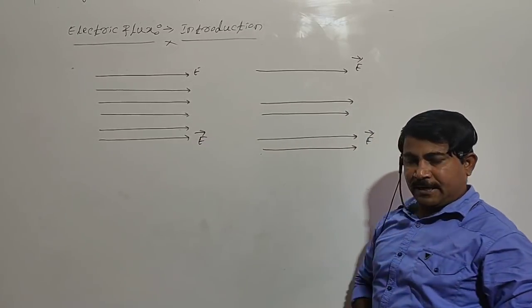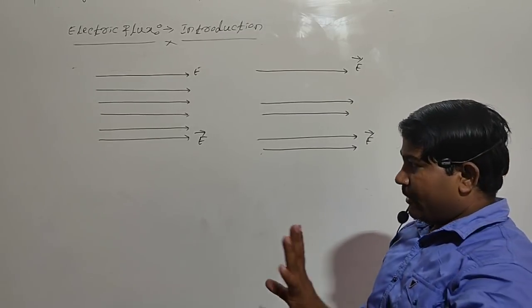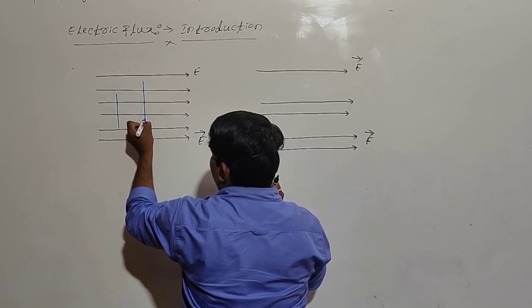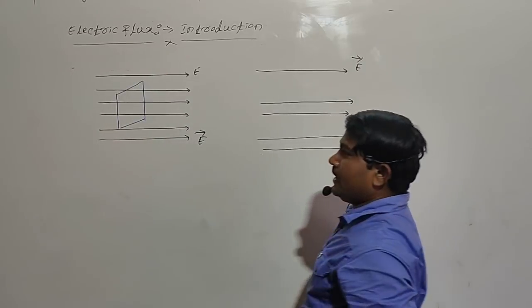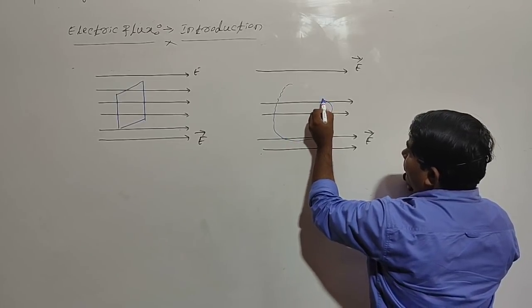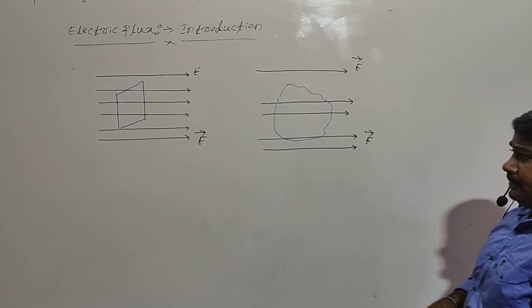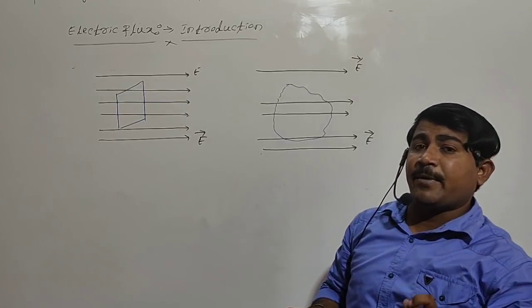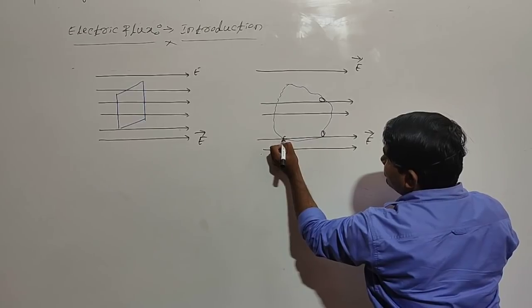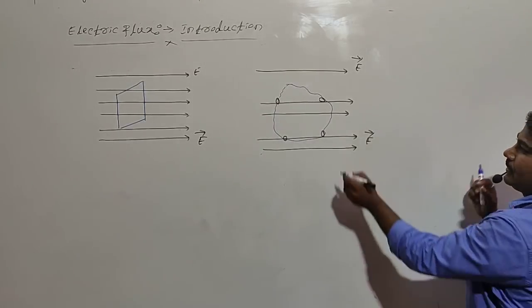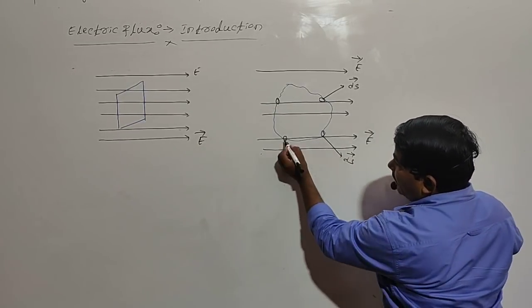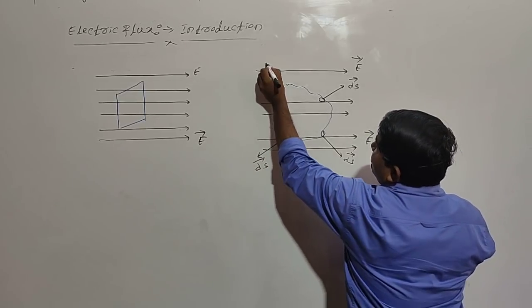We can take a planar area element or a non-planar area element. First, I will take a planar area element. For a non-planar area, divide this area into many smaller area elements, each being a planar area element. For each area element, the perpendicular drawn indicates the direction of area vector. In between the area vector and the electric intensity, there is an angle available — this angle is different for each area element.